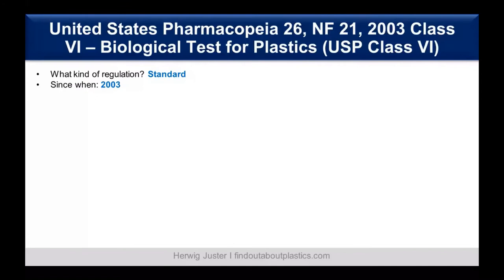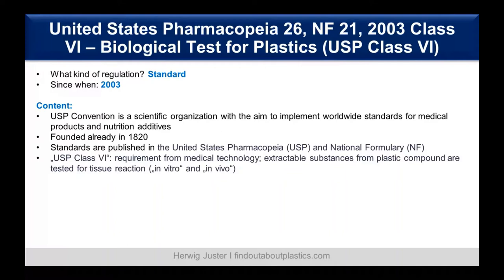Now let's continue with medical technology regulatory affairs. The first thing is the United States Pharmacopeia, also called USP NF21, or the Class VI Biological Test for Plastics — in short, USP Class VI. It's a standard. The USP Convention is a scientific organization with the aim to implement worldwide standards for medical products and nutrition additives. It was founded in 1820, and yearly the new standards and updates are published in the United States Pharmacopeia and the National Formulary.